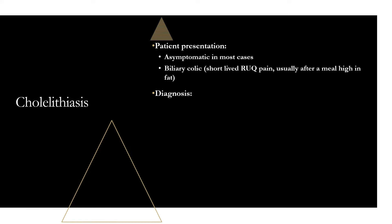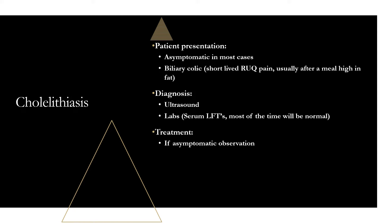For diagnosis, you're almost always going to start with an ultrasound — it's cheap, easy, and you can visualize the stones. Labs are not going to be very useful; most of the time they'll be normal. If you did see an increase in LFTs like alkaline phosphatase, it may indicate an obstructed cystic or bile duct. For treatment, if they're asymptomatic you can just observe. But if they become symptomatic or are at higher risk for complications — such as those with porcelain gallbladder, where the gallbladder becomes calcified and risk for carcinoma increases — you may want to do a cholecystectomy.